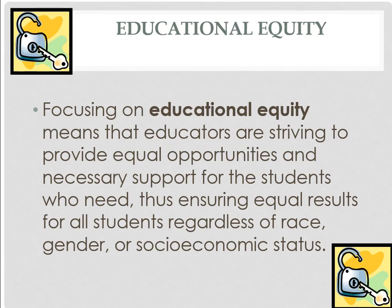Here's a formal definition of educational equity: focusing on educational equity means that educators are striving to provide equal opportunities and necessary support for the students who need it, ensuring equal results for all students regardless of race, gender, or socioeconomic status. Those pieces are really important to include, because there are times when educators and policymakers use race, gender, or socioeconomic status as an indicator for success or lack of success — and neither of them actually need to be an indicator. Not having access to all resources is not an indication of one's intelligence level or success level.